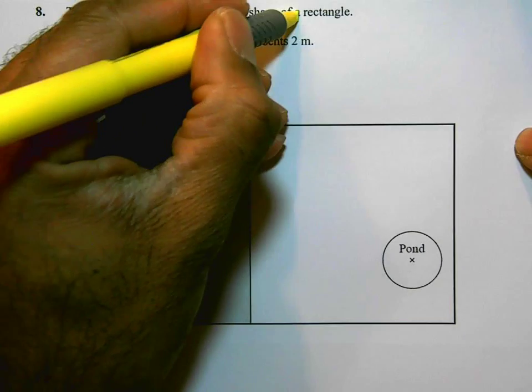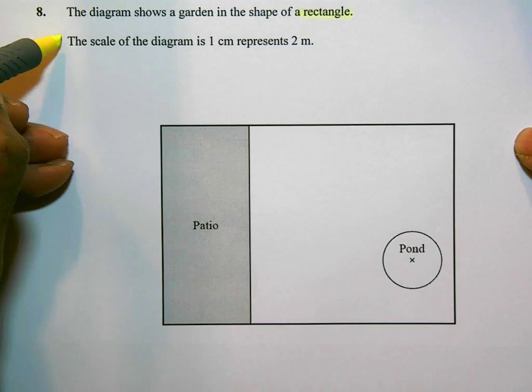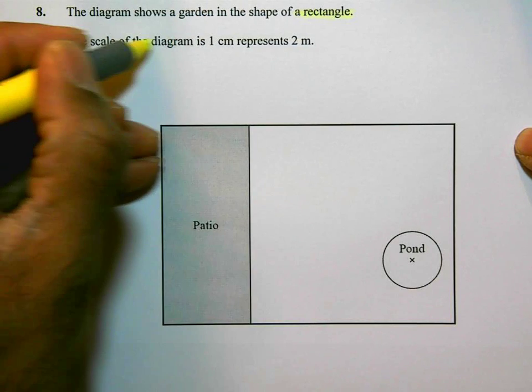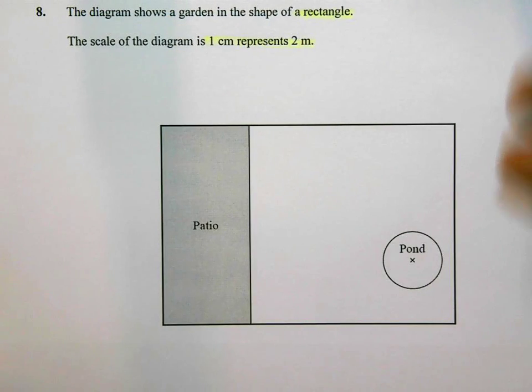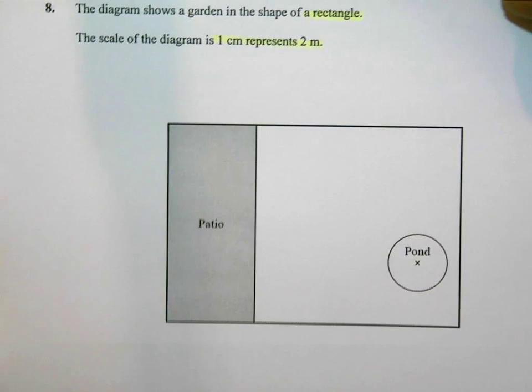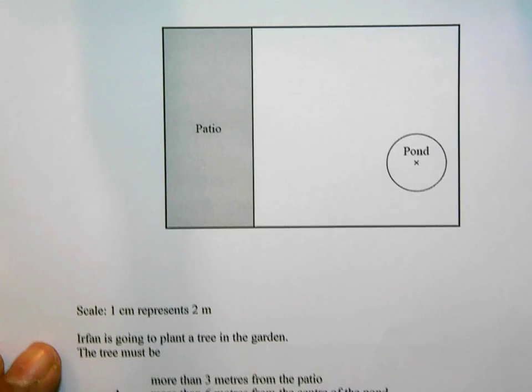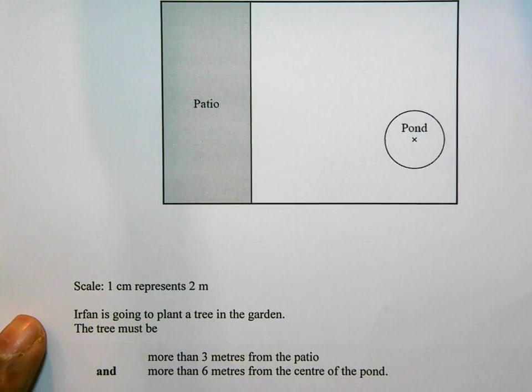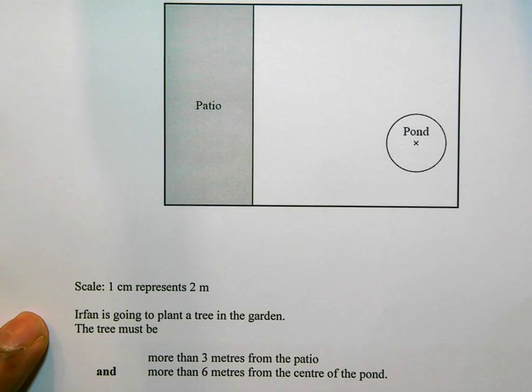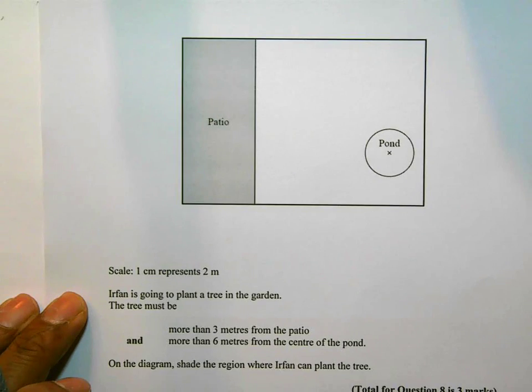It says it's a rectangle. The scale of the diagram is one centimeter represents two meters, so that may well be important. And then I have the diagram there and some bits of information down here. I'm going to zoom in on that so you can see it all.